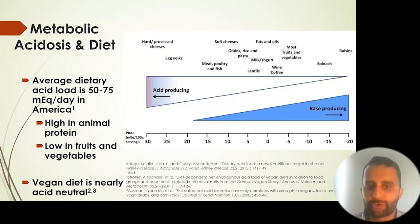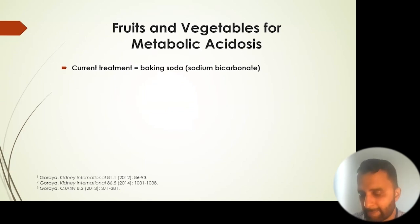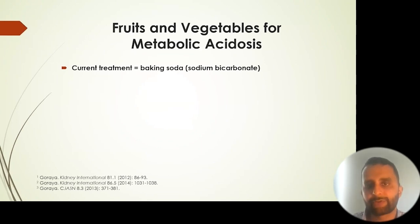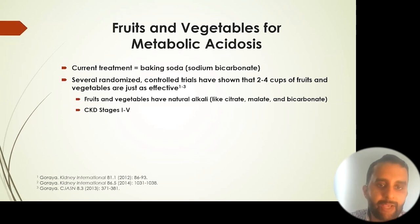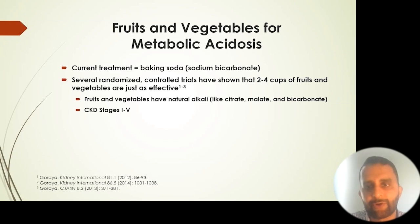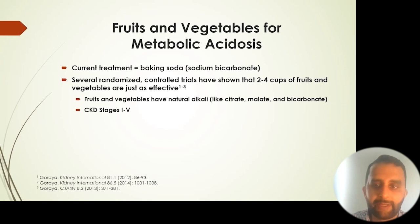A vegan diet is nearly acid-neutral, which is important to note, because you can actually treat metabolic acidosis — an accumulation of acid — with fruits and vegetables. The current gold standard for treating this condition in kidney disease patients is sodium bicarbonate, also known as baking soda. Several randomized controlled trials have shown that two to four cups of fruits and vegetables are just as effective. The reason fruits and vegetables work is because they contain natural alkaline compounds like citrate, malate, and bicarbonate.